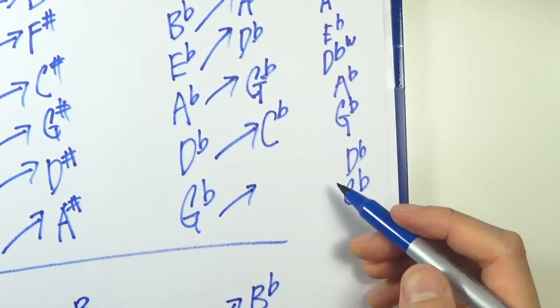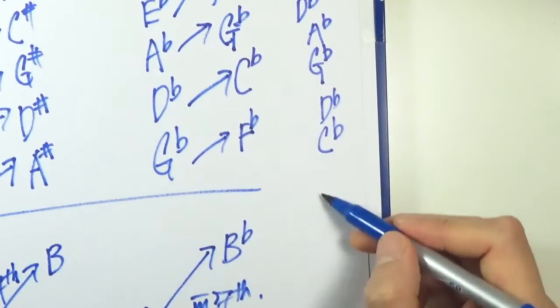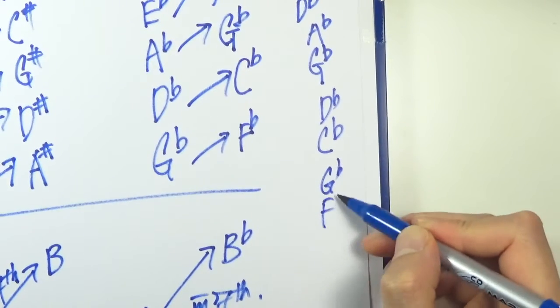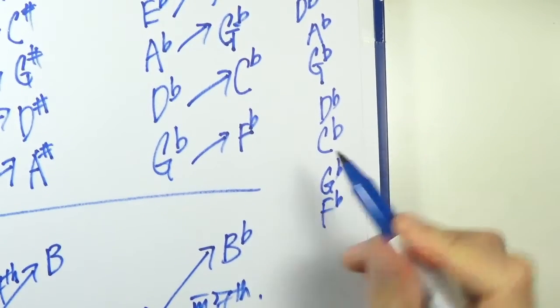Last one. G flat. I think it's an F, but with a flat. And let's check that again. G flat, F flat. Are they a whole step apart? I think so. So that's it.